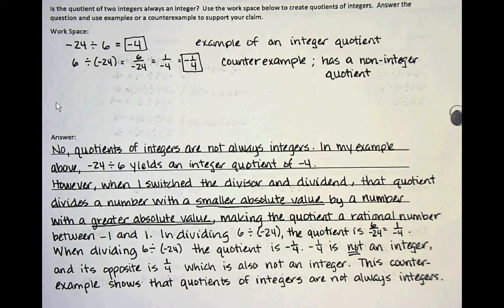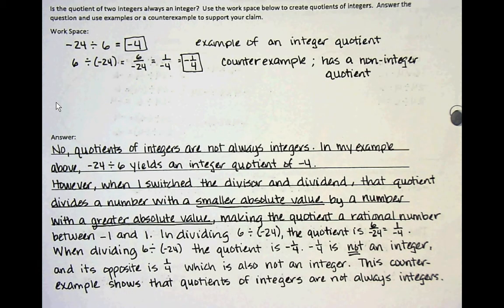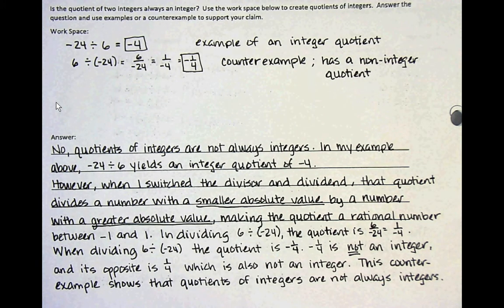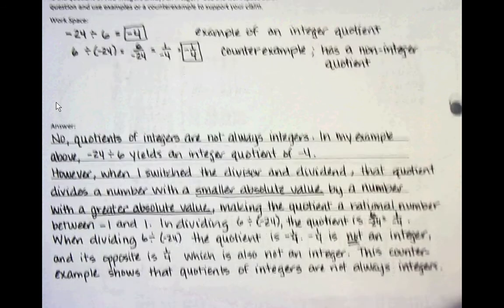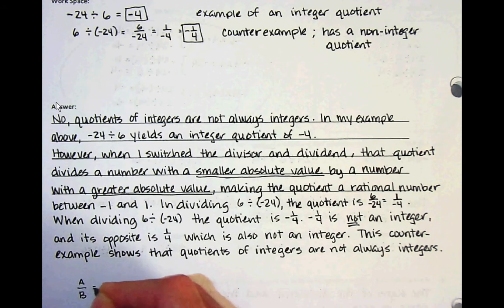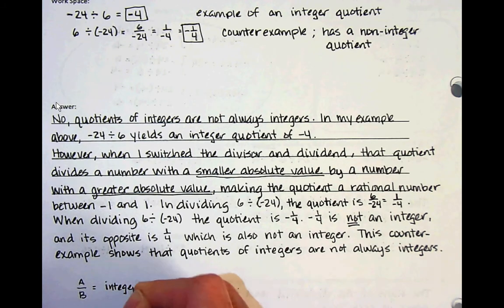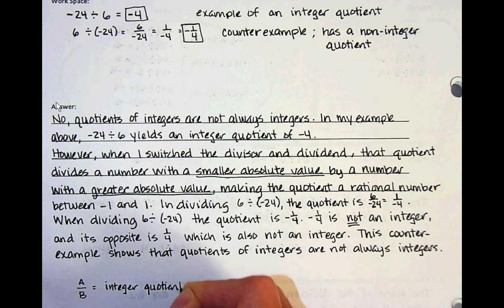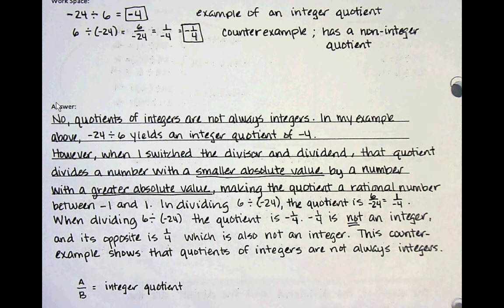Before we get off this subject, I want to pose a question to you. Is there a way where you can tell when two integers being divided will always come up with an integer quotient? If I have some number A divided by B, how do you know that answer is always going to be an integer quotient? Think about that — we're not going to answer it here, but I might ask it in class and see what you come up with.